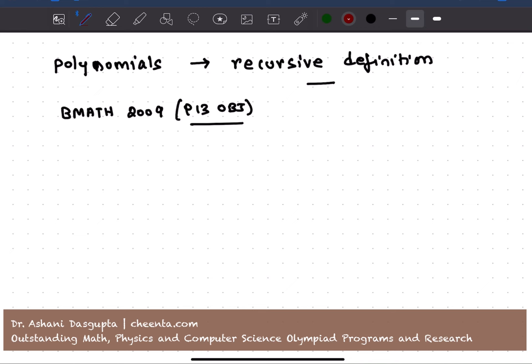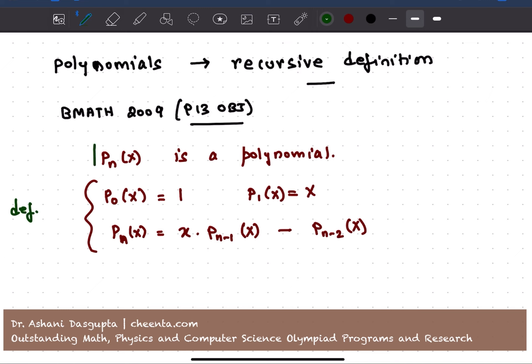It's given that P_n(x) is a polynomial, and it's defined like this. P_0(x) is equal to 1. P_1(x) is equal to x. And from P_2(x) onward, P_n(x) is equal to x times P_{n-1}(x) minus P_{n-2}(x). This is the definition of the polynomial, this is how the sequence of polynomials is defined.